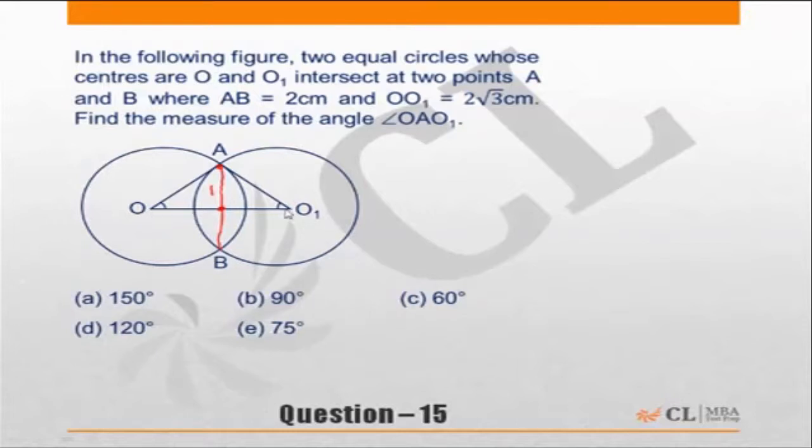So O to O₁, because these are equal circles, this point will bisect OO₁. So 2√3, let's say take this point as P. The OP will be √3 because OO₁ is 2√3. And we need to find out the angle OAO₁.